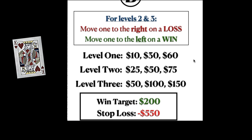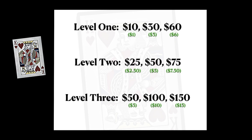Let's say I use this bet spread: we start off on level one — 10, 30, 60. If we do not hit on level one we move to level two. On level two and three, if you lose you move one to the right, and if you win you move one to the left. So if I place a $50 bet on level two and I lose, my next bet would be $75. If I win, I move one to the left and my next bet would be $50. My win target for this bet spread is $200 with a stop loss of $550.